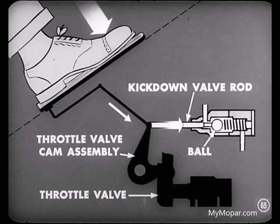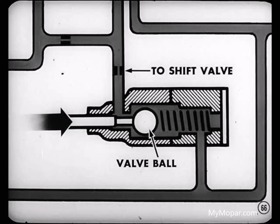In order to make the downshift, the accelerator pedal is depressed to the limit of its travel. The throttle valve cam assembly contacts the kickdown valve rod, moving it against the ball, unseating the ball. Unseating the kickdown valve ball permits throttle oil pressure to pass around the ball and go to the shift valve.